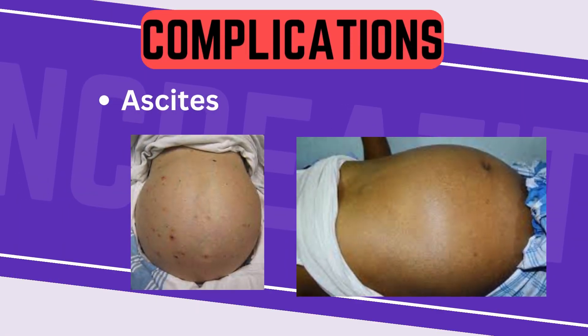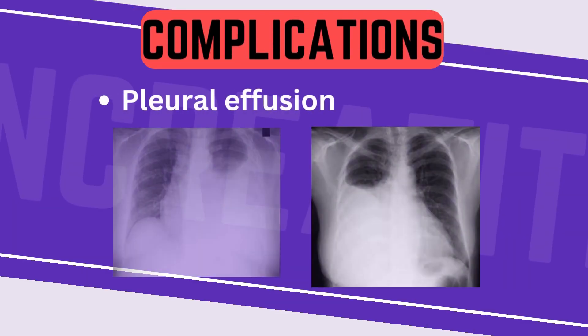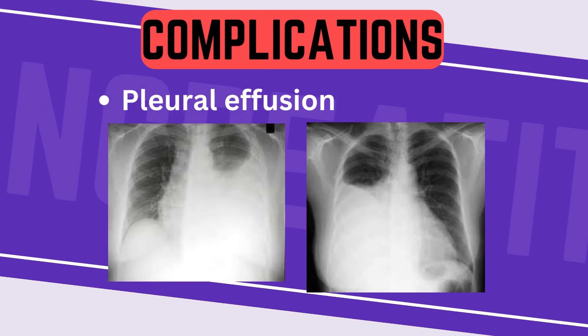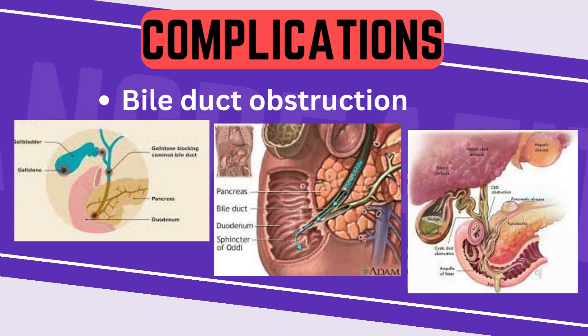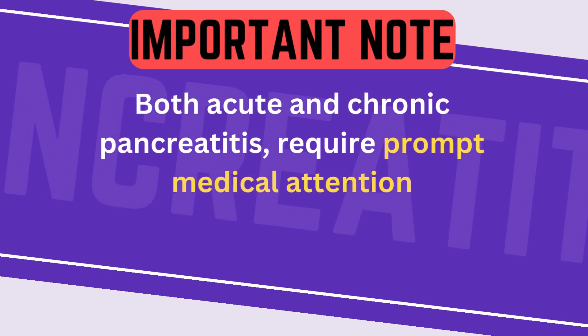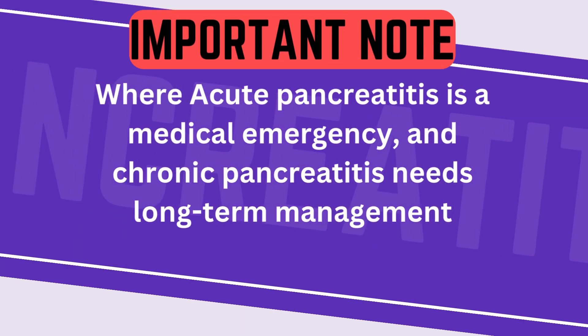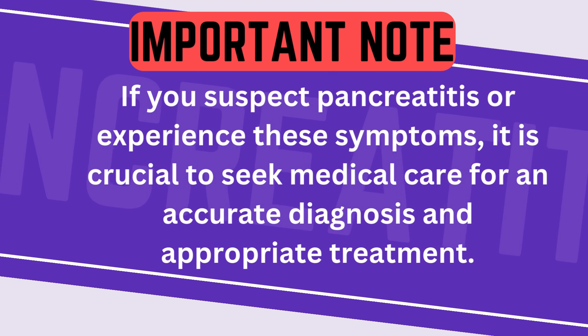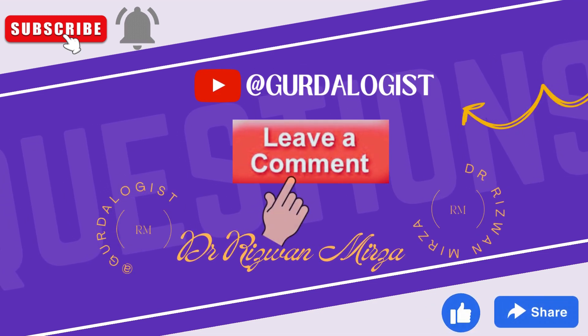11. Ascites — fluid accumulation in the abdominal cavity can occur as a result of liver or kidney complications. 12. Pleural effusion — fluid might accumulate in the pleural space around the lungs. 13. Bile duct obstruction — chronic inflammation can affect the bile ducts, leading to obstruction and complications related to liver function. Both acute and chronic pancreatitis require prompt medical attention — acute pancreatitis is a medical emergency, while chronic pancreatitis needs long-term management. If you suspect pancreatitis or experience these symptoms, it is crucial to seek medical care for an accurate diagnosis and appropriate treatment. If you have any questions or queries, please leave us a comment.